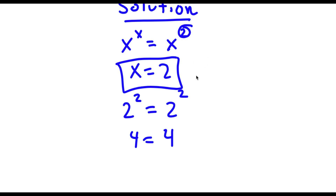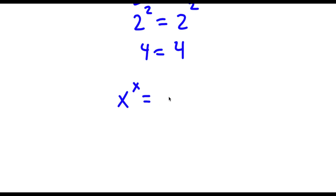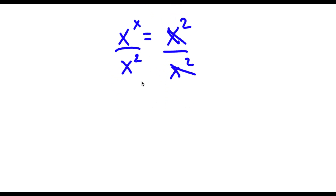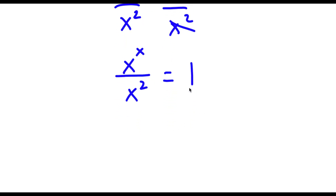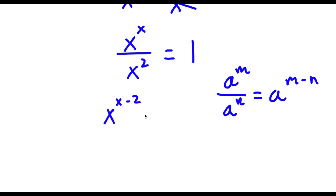However, this isn't the only solution to this problem. So to find all our solutions, let's go ahead and solve this equation. I start with x to the power of x equals x to the power of 2. Now I'm going to divide both sides by x to the power of 2. These two cancel out, and now I'm left with x to the power of x over x to the power of 2 equals 1. Using the exponent rule a^m over a^n equals a^(m-n), this gives x to the power of x minus 2 equals 1.